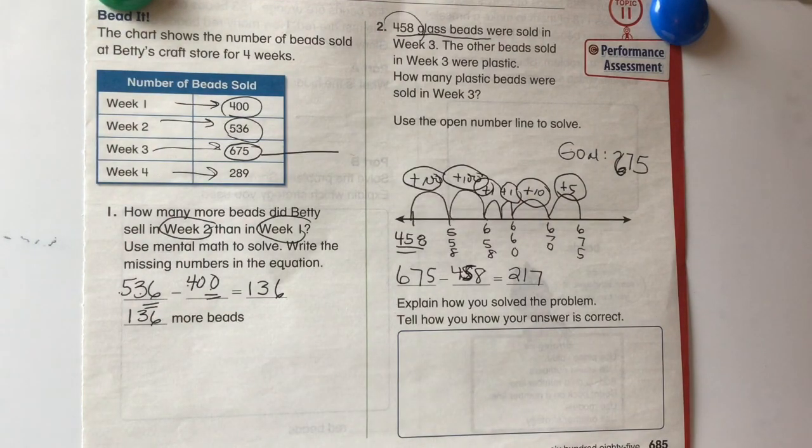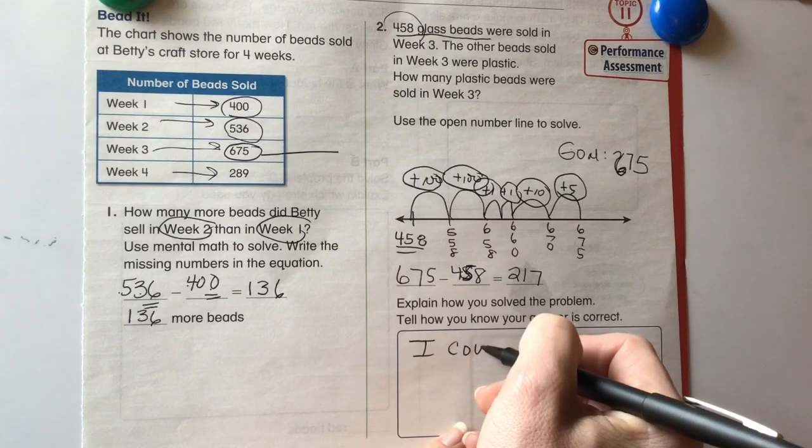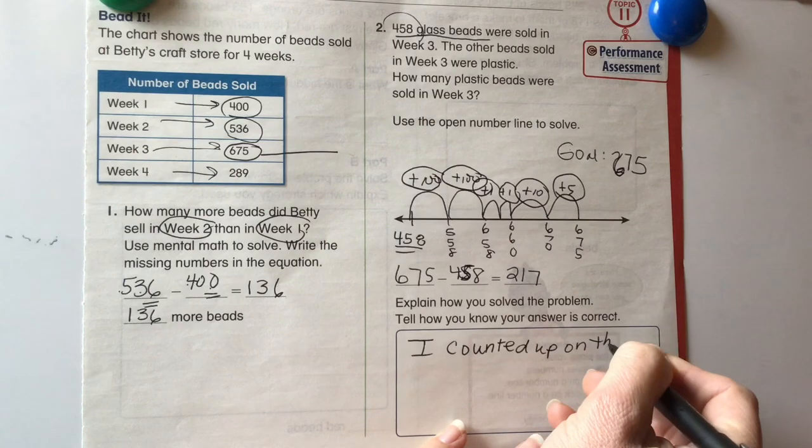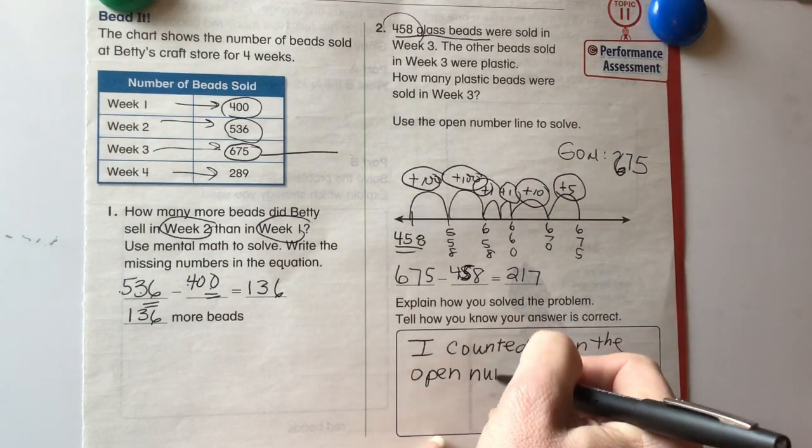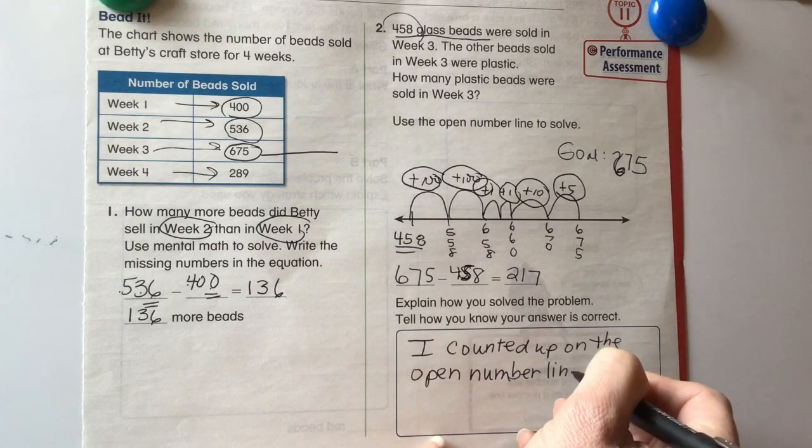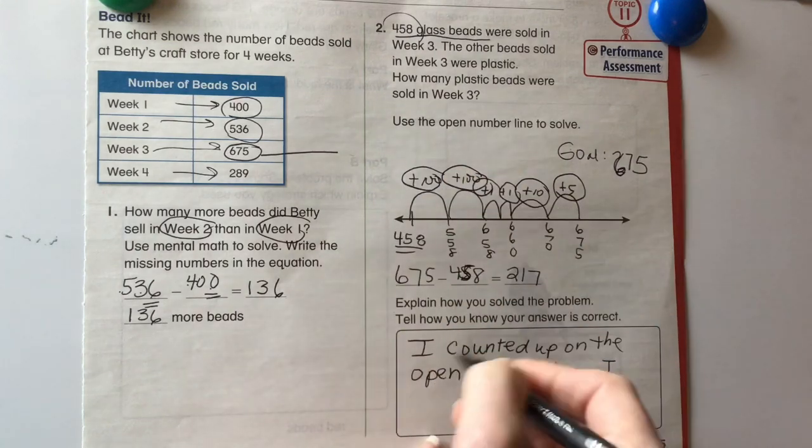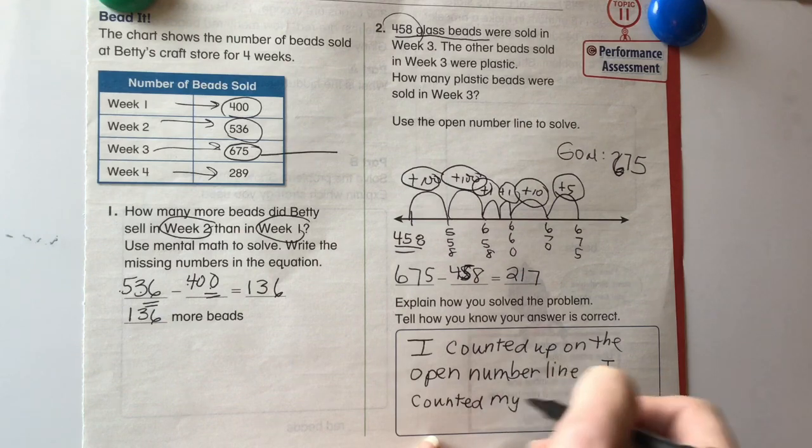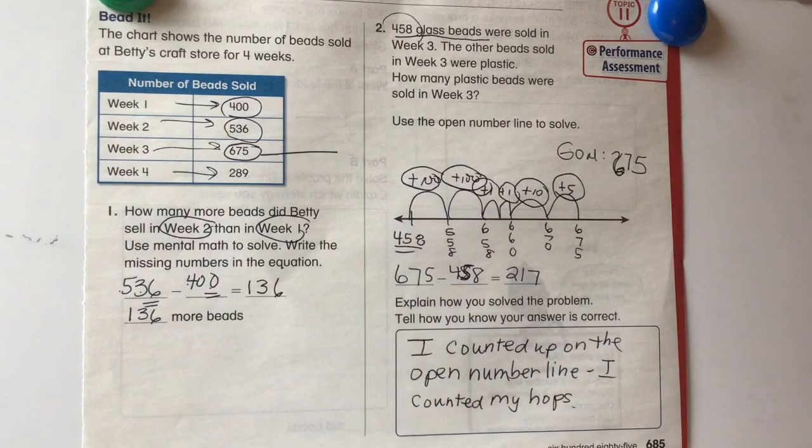And then it says, explain how you solved the problem. Tell how you know your answer is correct. You can say, I counted up on the open number line. And then it wants to know how you know the answer is correct. You can say, I counted my hops and added them together. Excellent job.